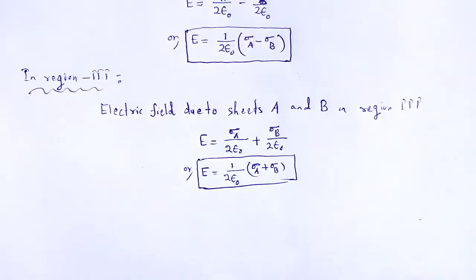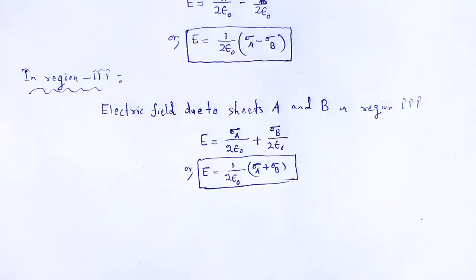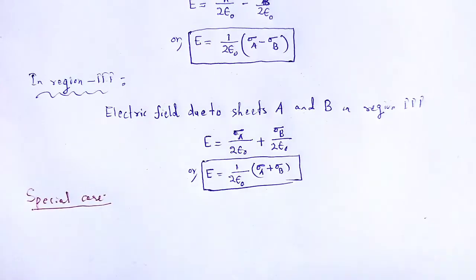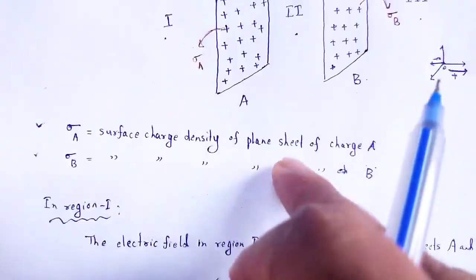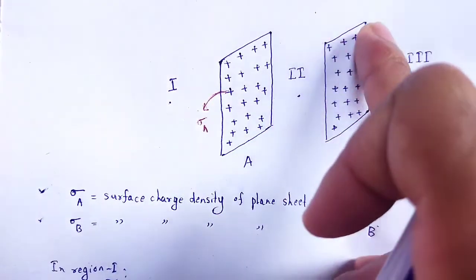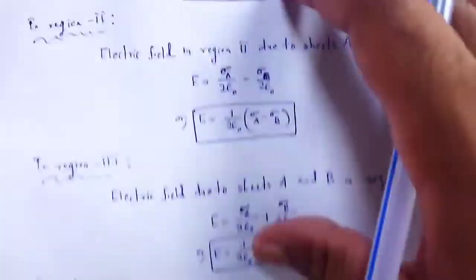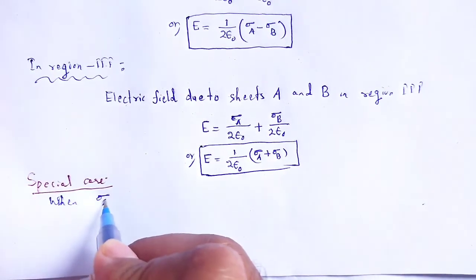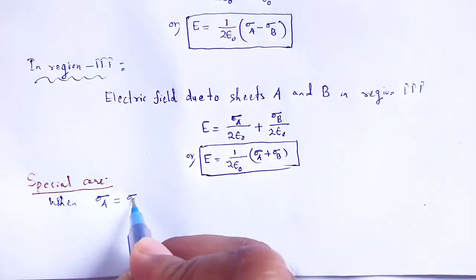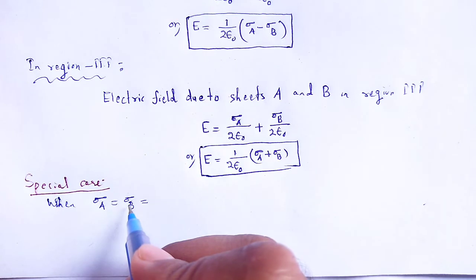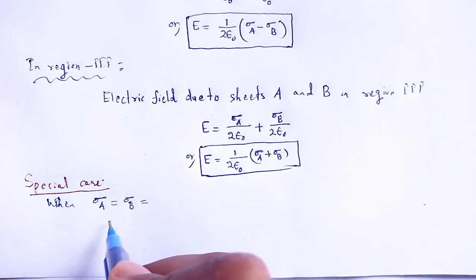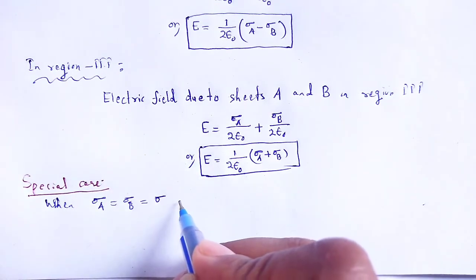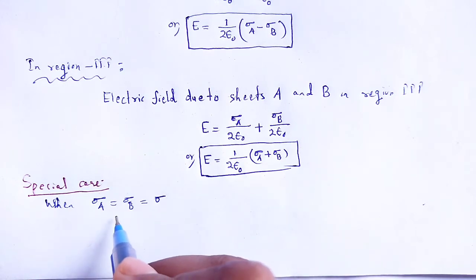Now we introduce a special case. If the surface charge density on sheet A is equal in magnitude but opposite in sign to the surface charge density on sheet B — that is, sigma A equals sigma and sigma B equals negative sigma.